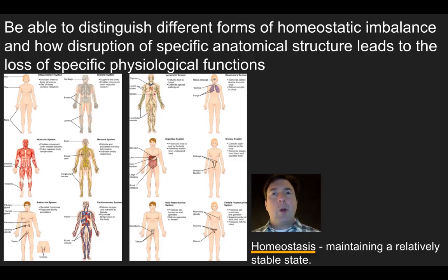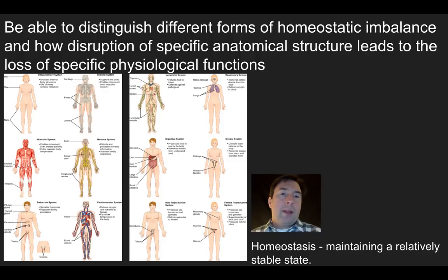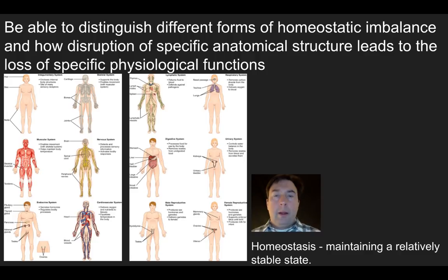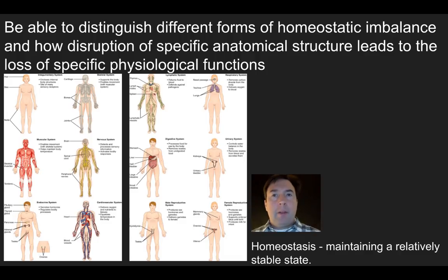In the lower right corner, we see the word homeostasis. Homeostasis means maintaining a relatively stable state — all these body systems work to keep your body at an even keel. One example is body temperature: your body wants to stay at 37 degrees Celsius, which is the optimal temperature for most enzymatic activities. If your body gets too cold, body systems will work to raise the temperature back up to 37 degrees Celsius.